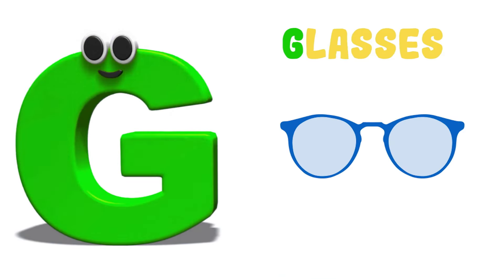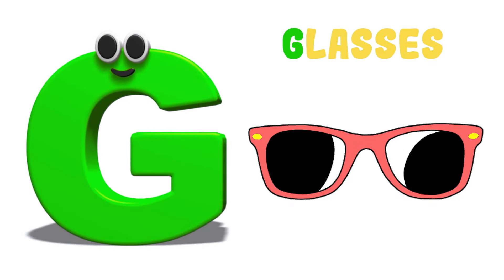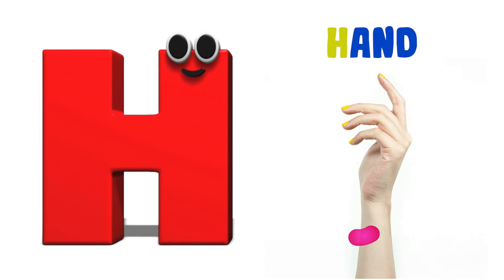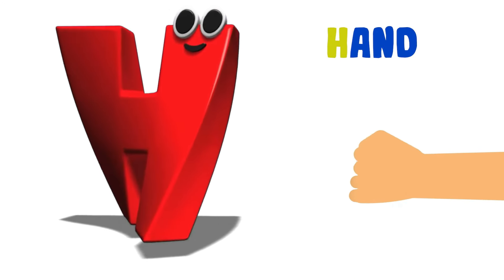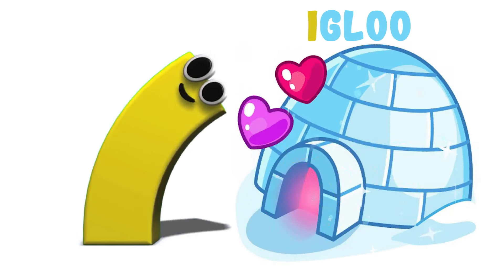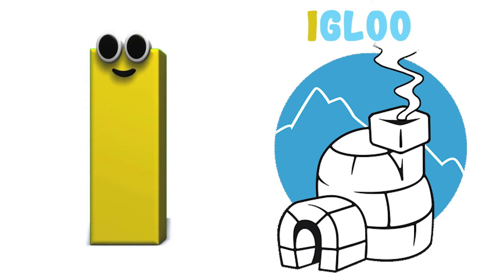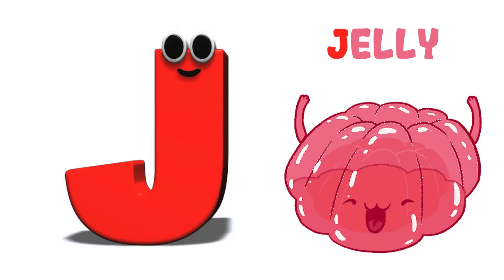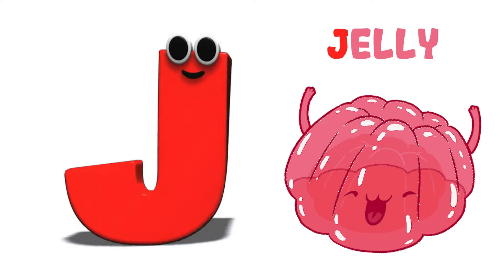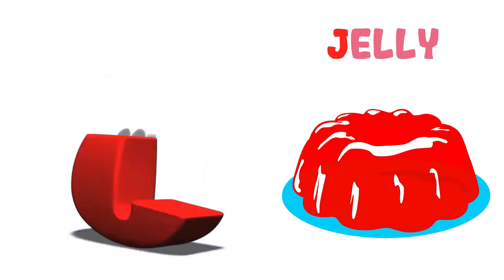G is for glasses. G, glasses. G, glasses. H is for hand. H, hand. H, hand. H, hand. I is for igloo. E, igloo. E, igloo. J is for jelly. J, jelly. J, jelly. J, jelly.